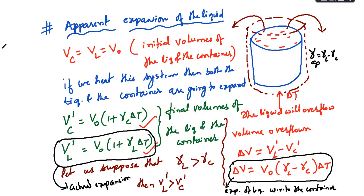So here, γ_apparent = γ_l − γ_c. This is neither the coefficient of expansion of the liquid alone nor of the container alone — it is the coefficient of expansion of liquid with respect to the container. That is why we call it γ_apparent. Please note down till this point. I hope all of you understood.